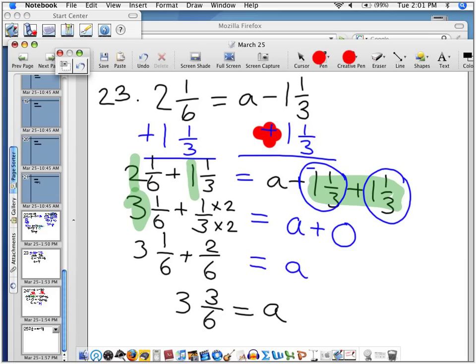A is three and three-sixths. And because we want all answers in simplest form, a can be written as three and one-half.